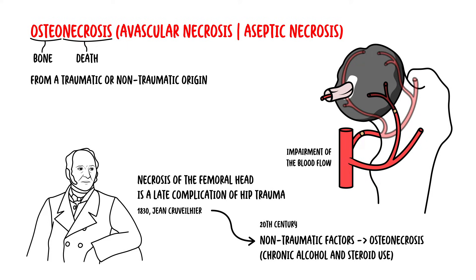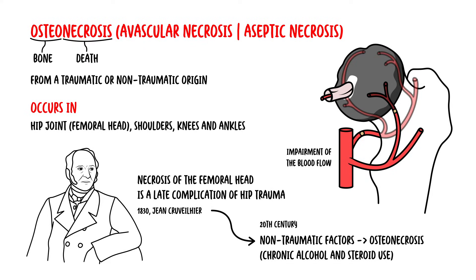Osteonecrosis most often happens in the hip joint, the femoral head, but may also occur in other anatomical locations, such as the shoulders, the knees, and the ankles. In this video, we will mostly focus on hip osteonecrosis.